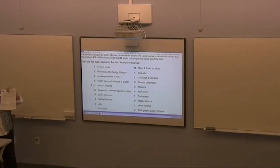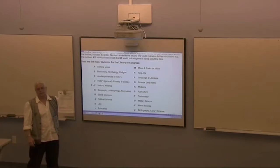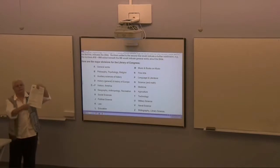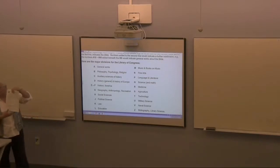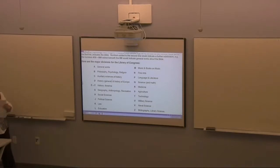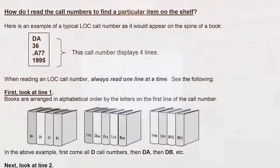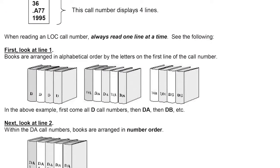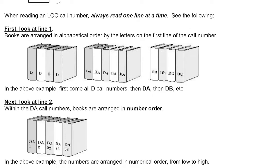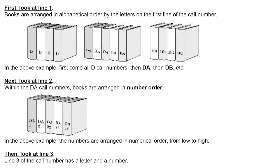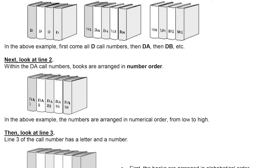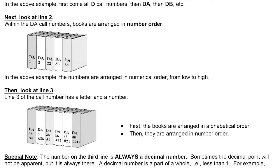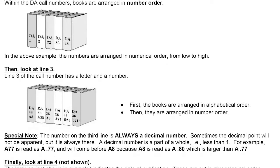Any college or university — whether you go to Adams State in Colorado or Harvard University — the materials are going to be arranged in the same order. So when you move on to another college, you'll be more familiar with how it works. On the back of the sheet, it tells you how to find a particular item. In a minute, we'll go online, do some searches, and you'll find the call number or address to get exactly to that book on the shelf. That's how we find materials — just a little refresher.